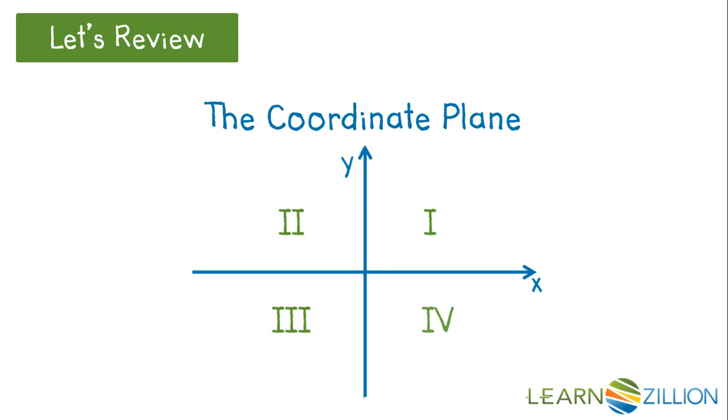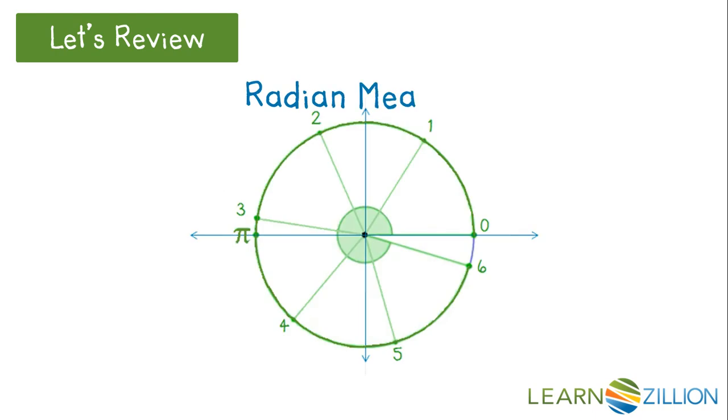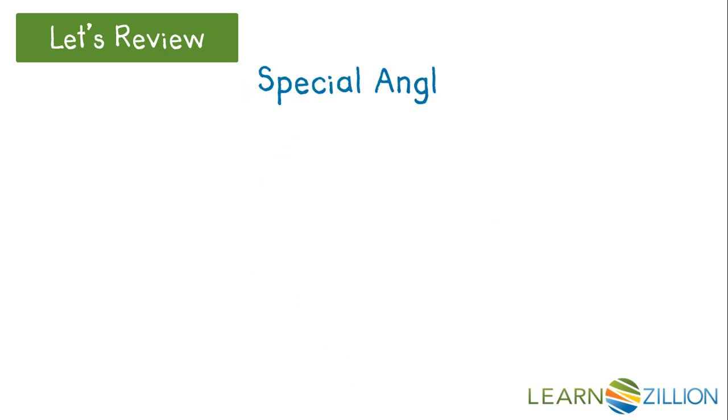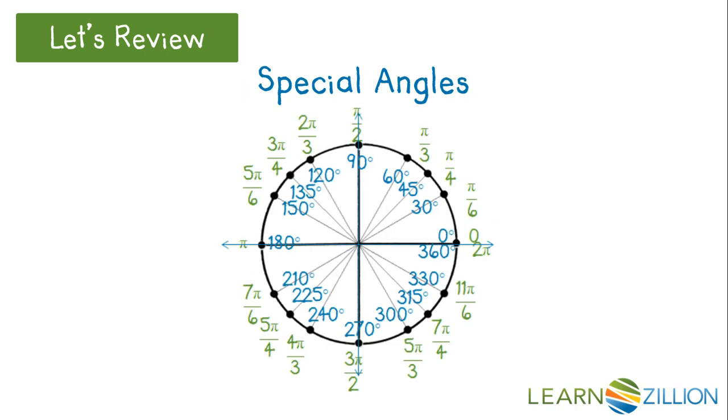You've previously learned that the four quadrants of the coordinate plane are numbered counterclockwise, starting at the upper right quadrant. You know about radians and have a feel for the radian measure of angles in each quadrant. You've nearly memorized the special angles in each quadrant in both degrees and radians.